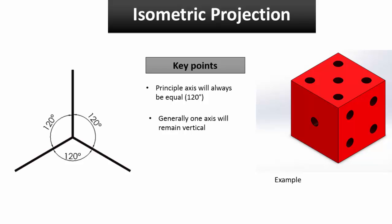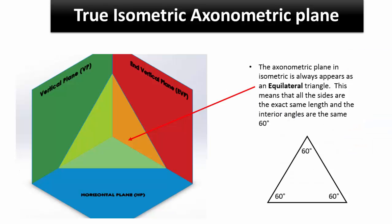Firstly, isometric is where all internal angles are 120 degrees. One axis is generally vertical. The axonometric plane in isometric always appears as an equilateral triangle. This means all the sides are the same and the interior angles are all 60 degrees.